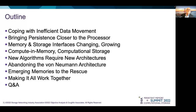We have a big agenda to go through in a brief time, and so we'll be moving pretty quickly. We'll leave some time at the end for questions in case we moved a little bit too fast. In a nutshell, we'll be talking about the issue of inefficient data movement, and a number of approaches being used to solve that problem, from bringing persistence to the memory hierarchy through moving compute into memory and storage devices, to abandoning the von Neumann computer architecture altogether, and we'll end by showing how emerging memory technologies help in these efforts.